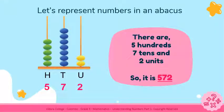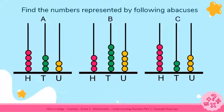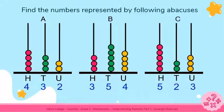Let's represent numbers on an abacus. On the screen you can see an abacus with 3 poles. Down below you can see H, T and U, which represent hundreds, tens and units. By counting the beads in each pole, you can get the number. There are 5 hundreds, 7 tens and 2 units, so the number is 572. Find the numbers represented by the following abacuses A, B and C. The answers are 432, 354, and 523. Did you get them correct?